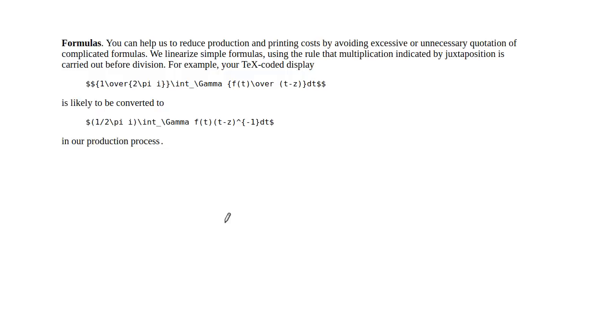This is from a style guide put out by the American Mathematical Society and here they clearly say that they use the rule that multiplication indicated by juxtaposition is carried out before division and here they're just saying that if you write something like 1 over 2 pi i they're going to change it to 1 slash 2 pi i and that these mean the same thing.